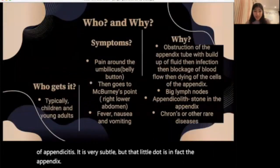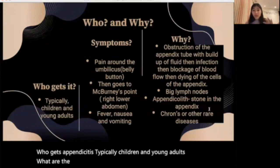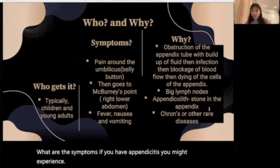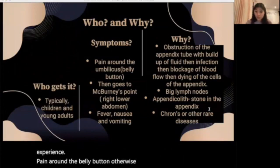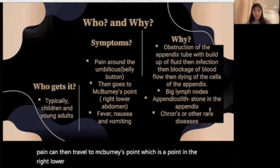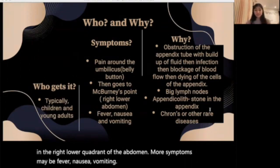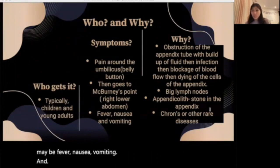Who gets appendicitis? Typically children and young adults. What are the symptoms? If you have appendicitis you might experience pain around the belly button, otherwise known as the umbilicus. This pain can then travel to McBurney's point, which is a point in the right lower quadrant of the abdomen. More symptoms may include fever, nausea, and vomiting.